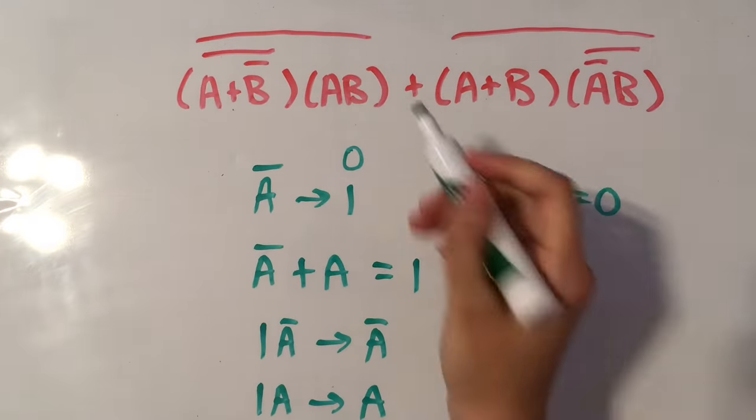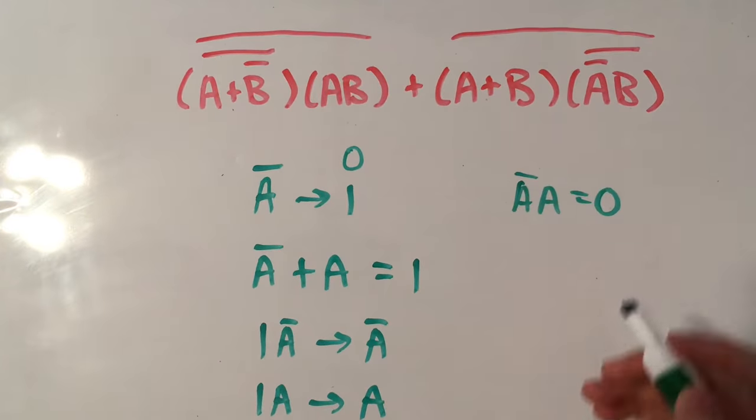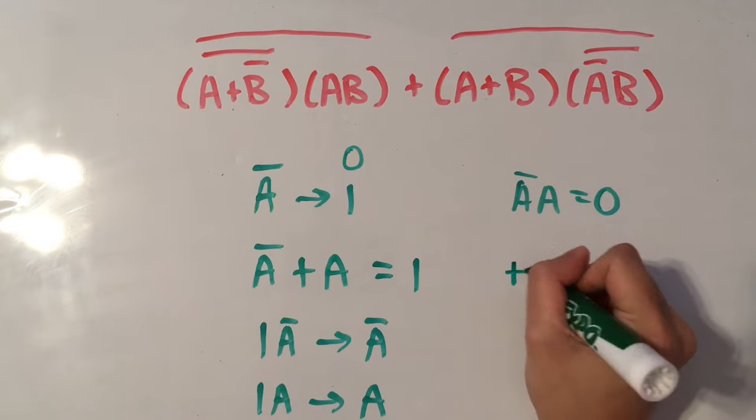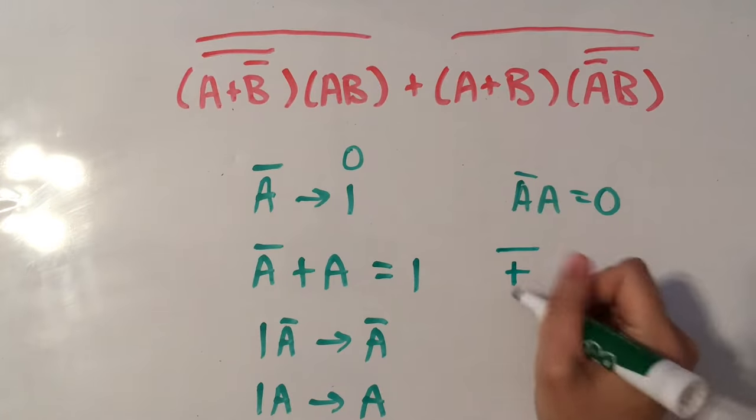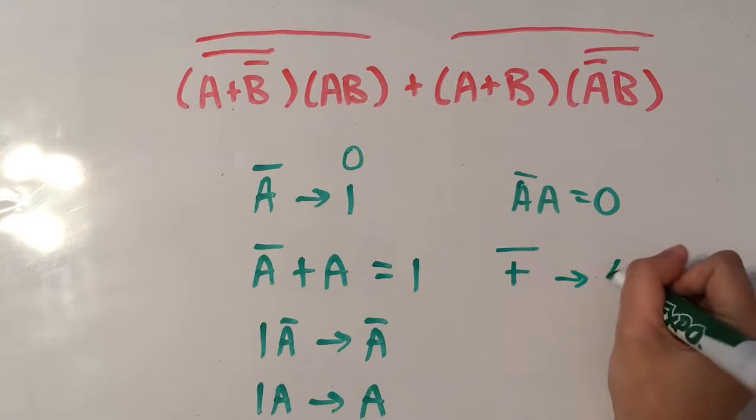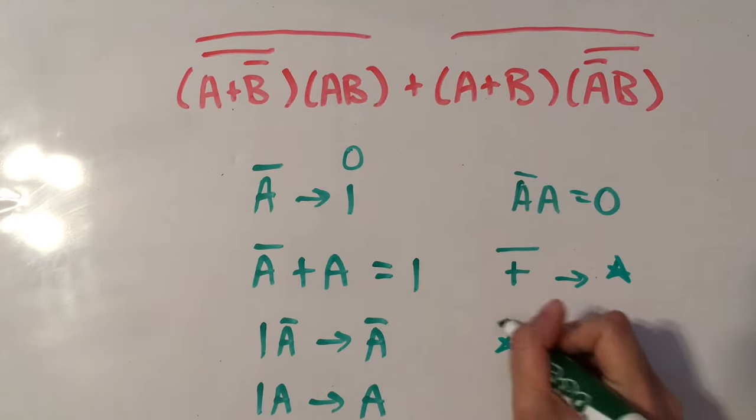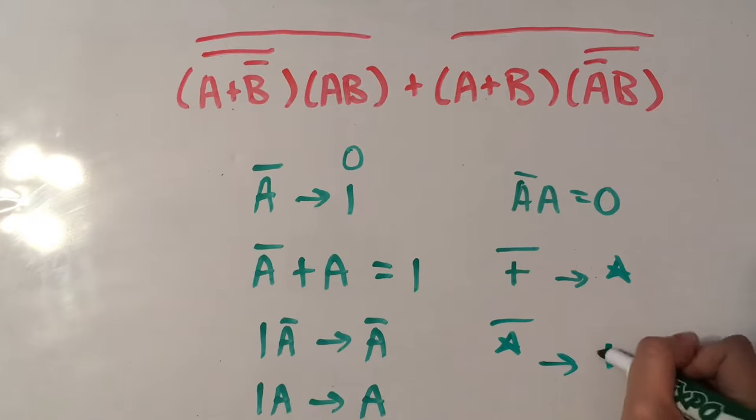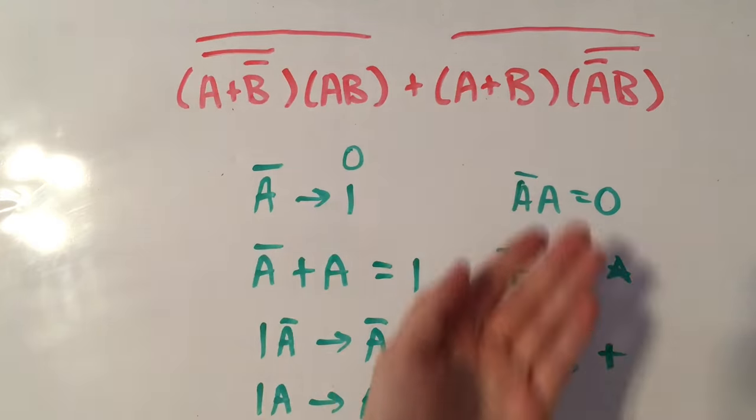And we also have plus and multiply. So when we have plus with a line over it, which is NOT plus, that translates into multiplication. And same thing with multiplication, you change it into plus. So now that we know all of this, let's try to solve this equation.